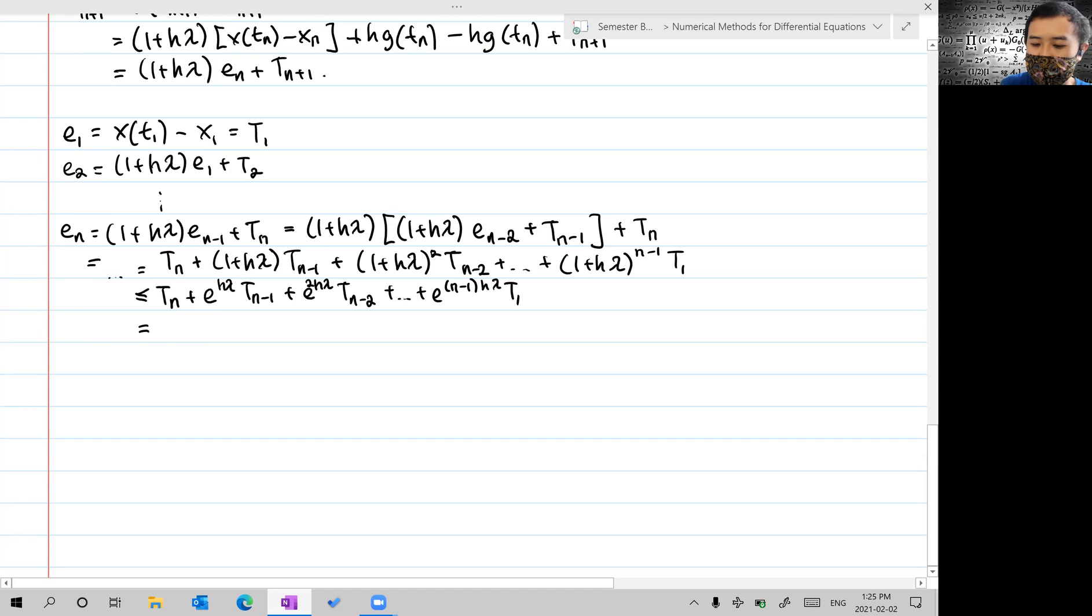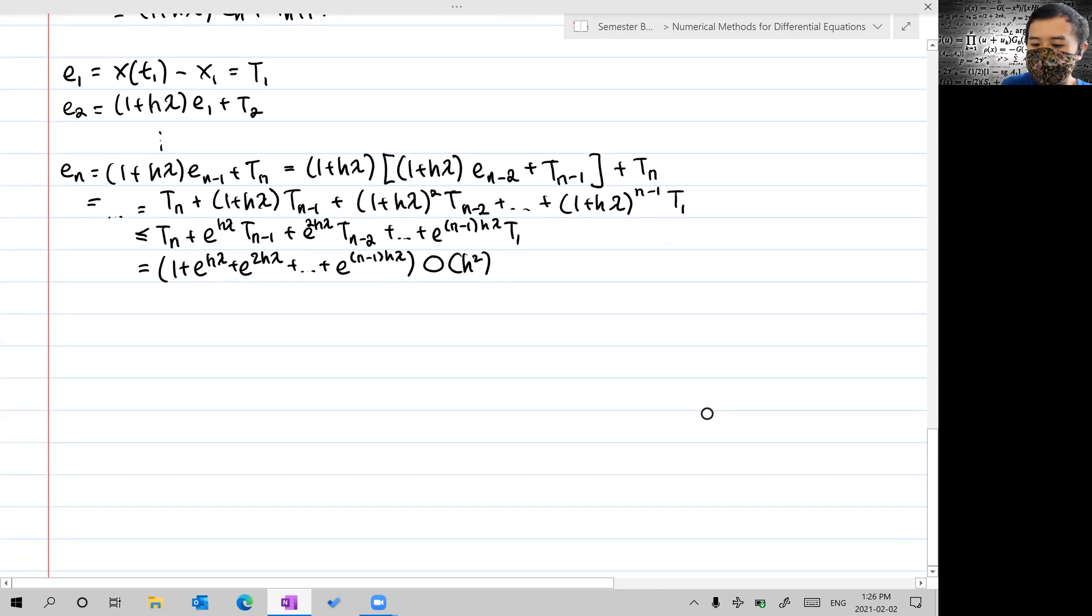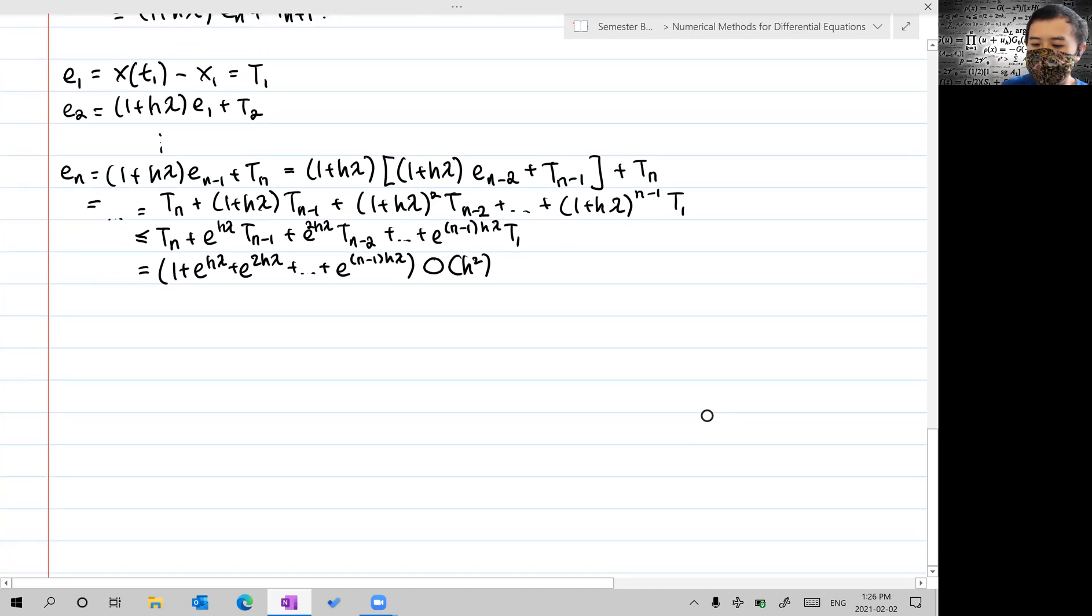Since the local truncation error has a term in the form of O(h²) in Landau's notation, we should get a sum up to e^{(n-1)hλ} of O(h²).